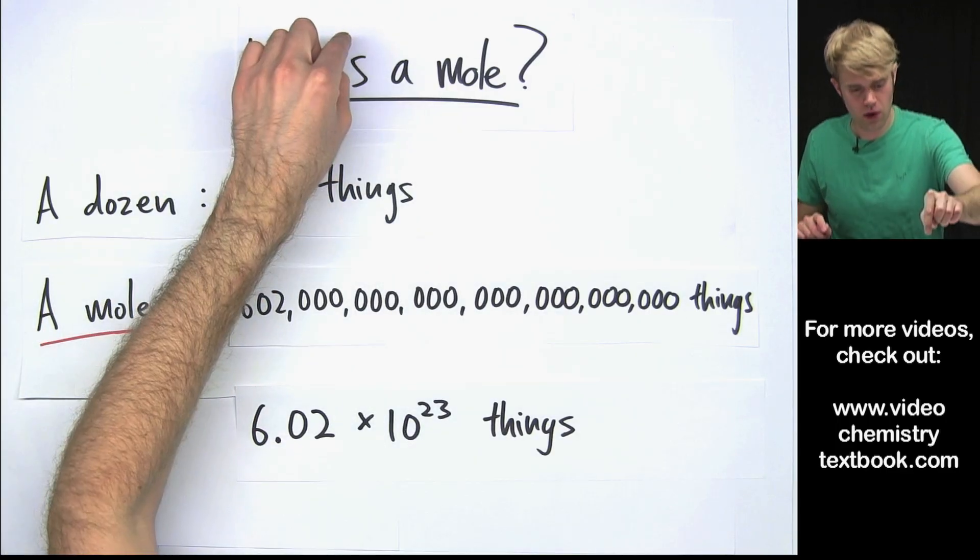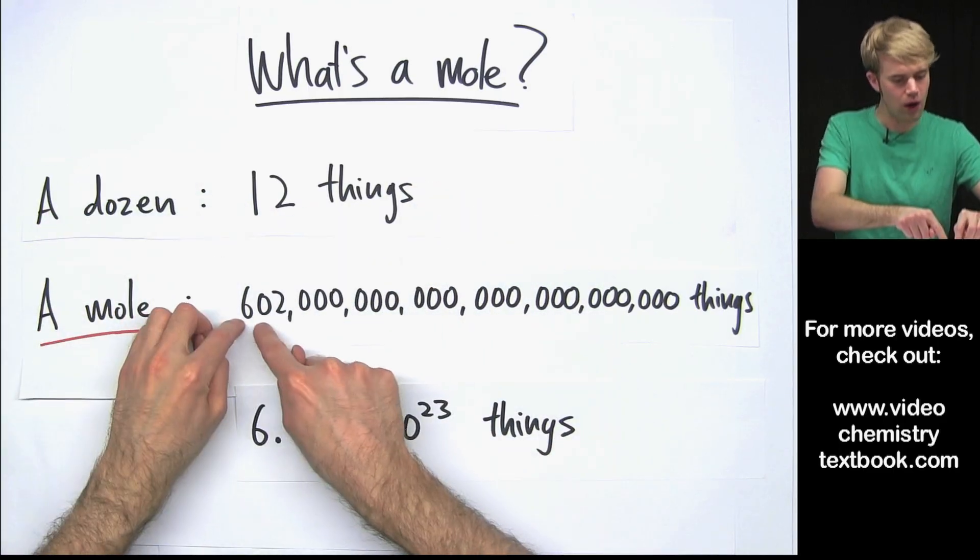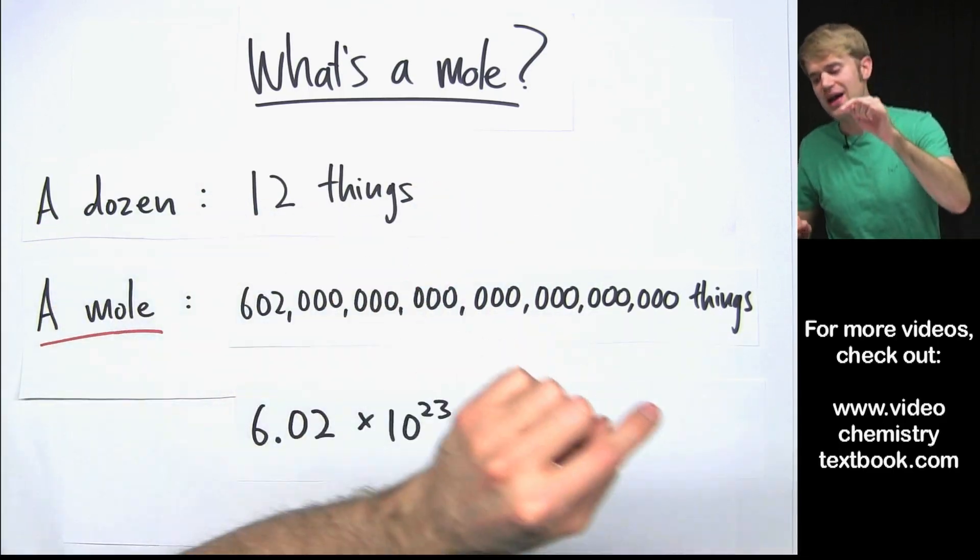So what's a mole? A mole is like a dozen except a dozen has 12 things in it and a mole has 602 hexillion things in it.